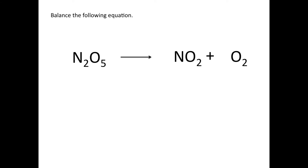The first thing you want to do is know exactly how many of each type of atom you have on each side of the reaction arrow. On the reactant side we have two nitrogen and five oxygen. On the product side we have one nitrogen atom, then two oxygen atoms from the NO2 plus another two oxygen atoms from the O2, for a total of four oxygen atoms.